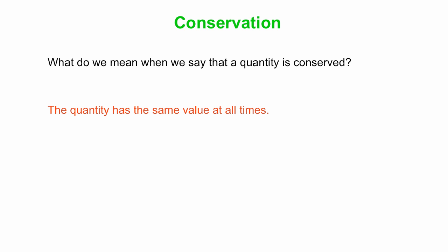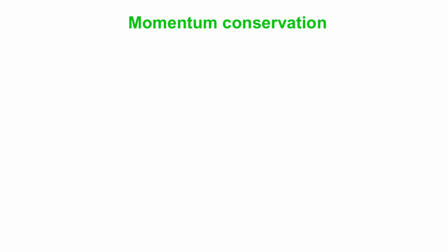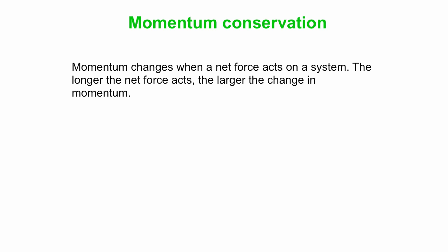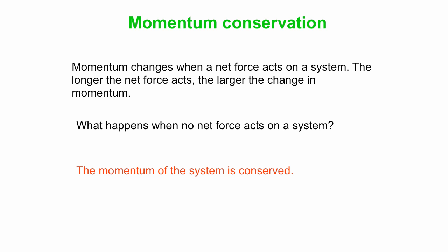What about conservation of momentum? First, let's go over what we mean when we say that something is conserved. That means it has the same value at all times. Momentum conservation: note that momentum changes when a net force acts on a system. The longer the net force acts, the larger the change of momentum. The bigger the force, the larger the change of momentum. But what happens if no net force acts on a system? Then there is no change in momentum. In other words, the momentum of the system is conserved.